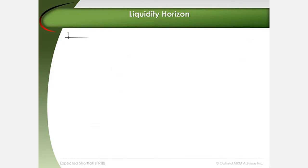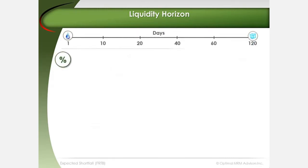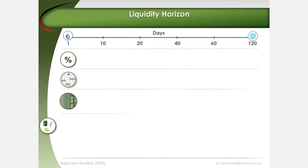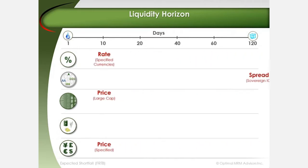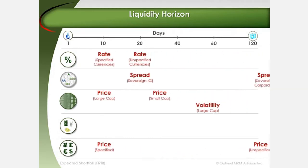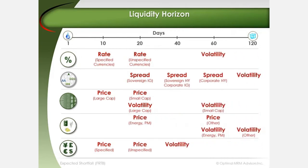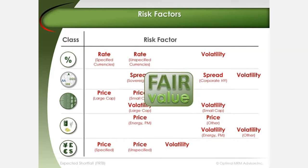Expected shortfall changes the assumption that all traded positions can be unwound in 10 days to periods of up to 120 days depending on the type of risk exposure. In order to calculate expected shortfall, banks must first choose a set of risk factors that affect the fair value and sensitivity of trading book positions.